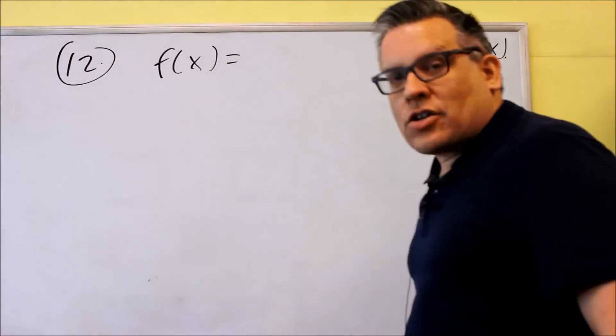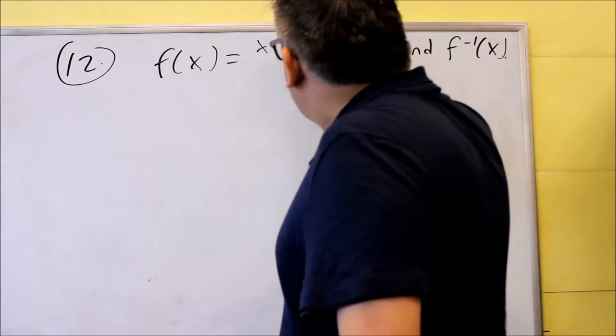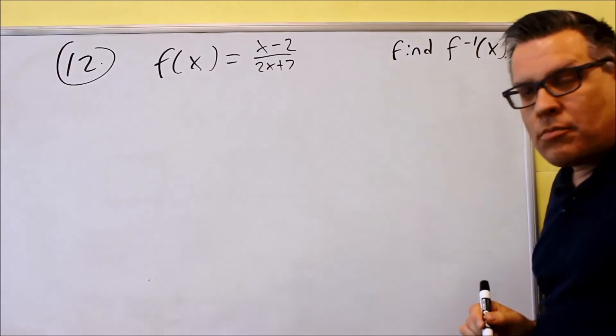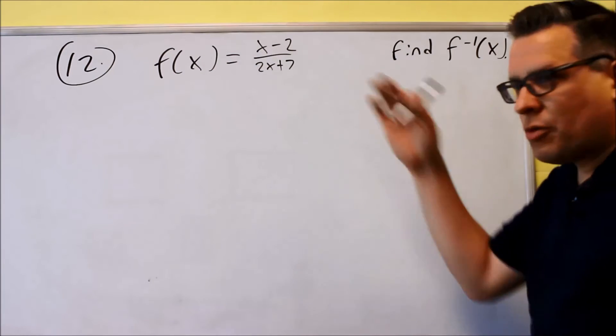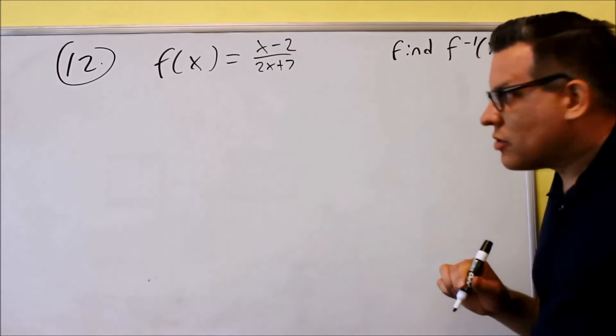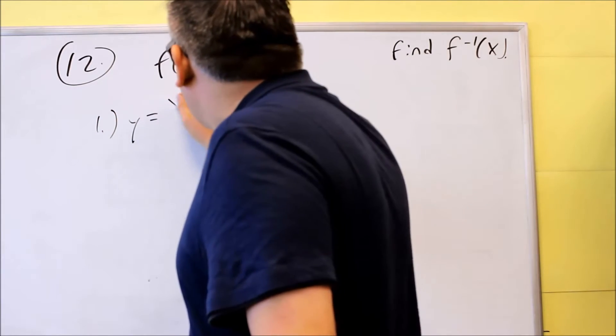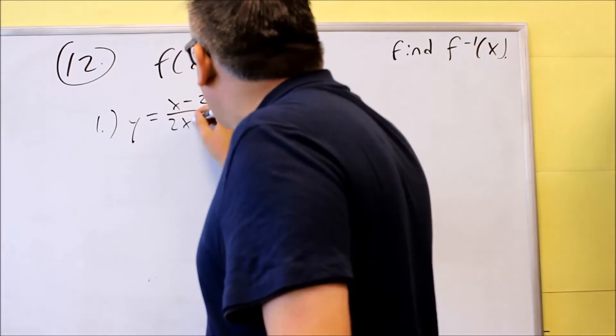Okay, so let's do one with a fraction. Let's do f(x) equals x minus 2 over 2x plus 7. Let's just go ahead and do that. We want to find the inverse of this one. This is done a little bit differently as far as the algebra is concerned. So step number 1, we write that as y equals x minus 2 over 2x minus 7.